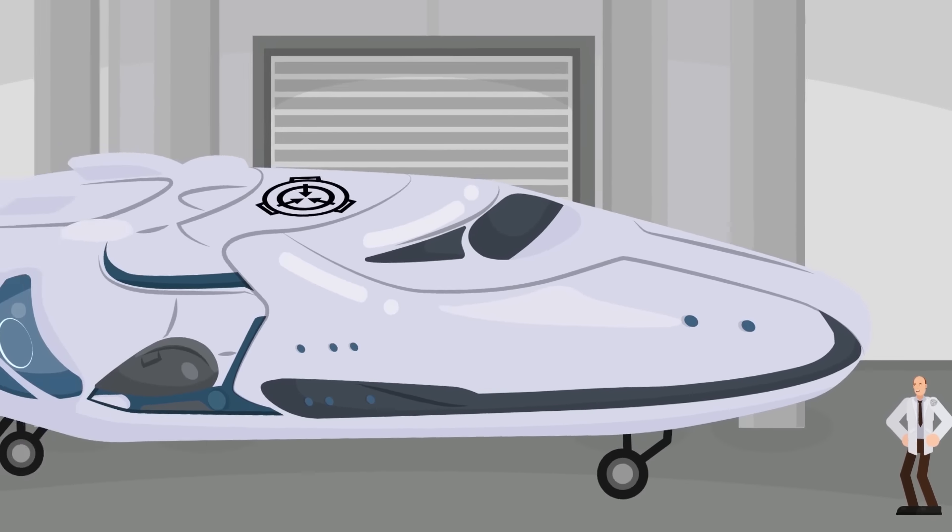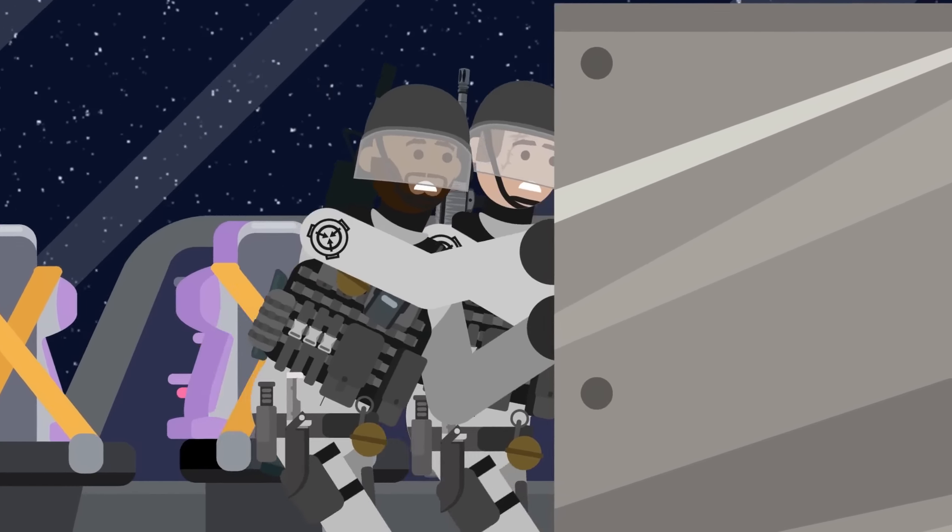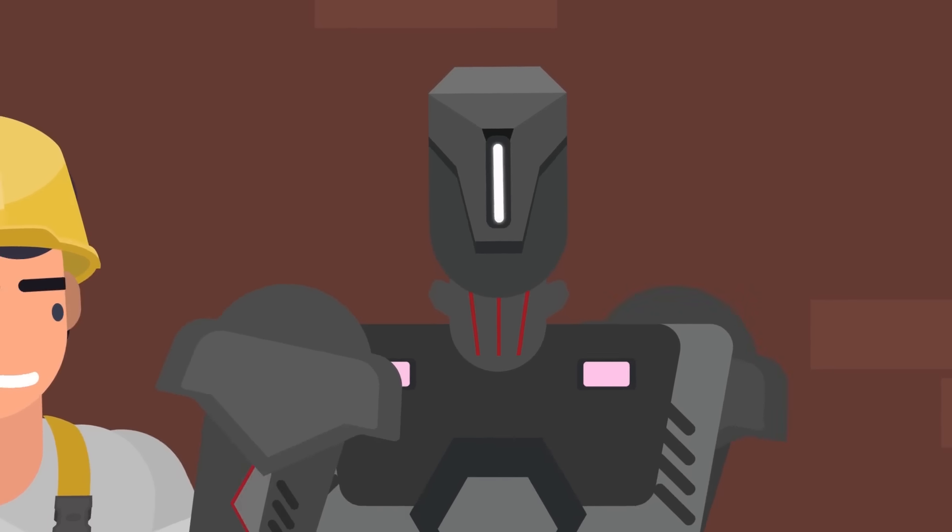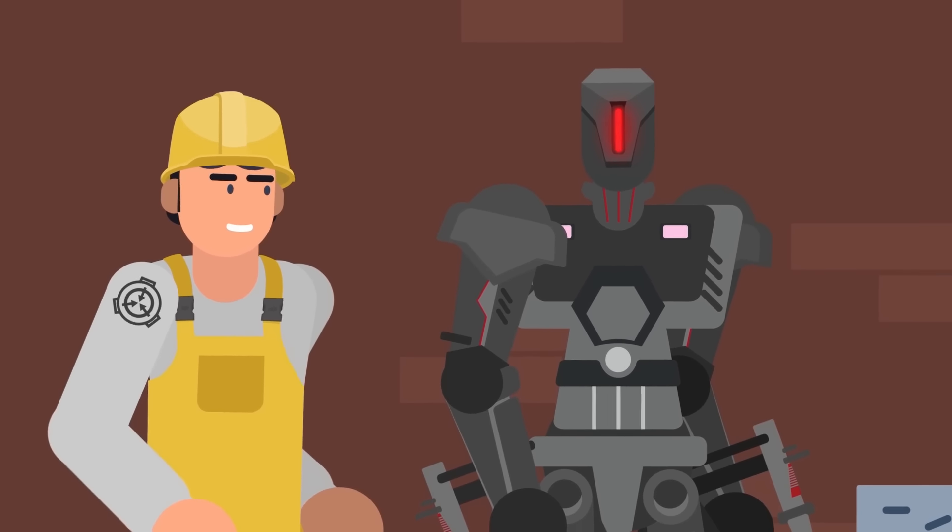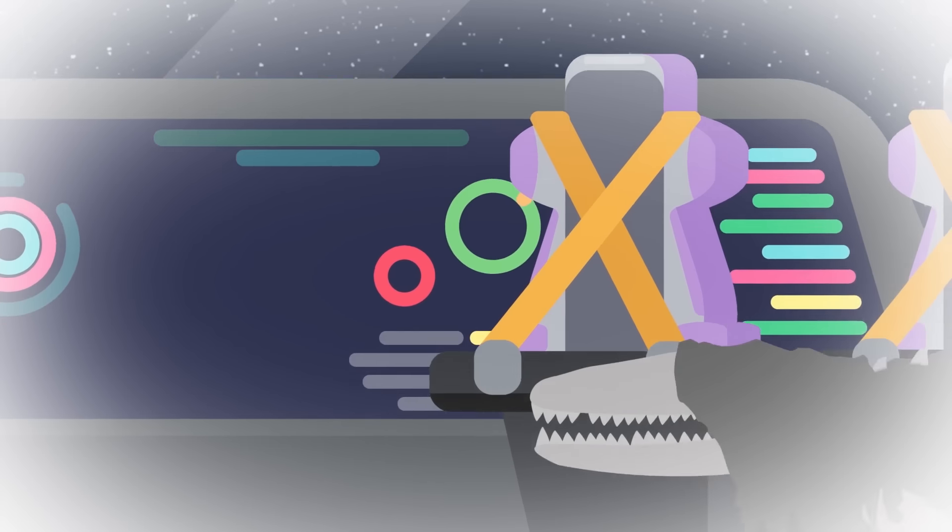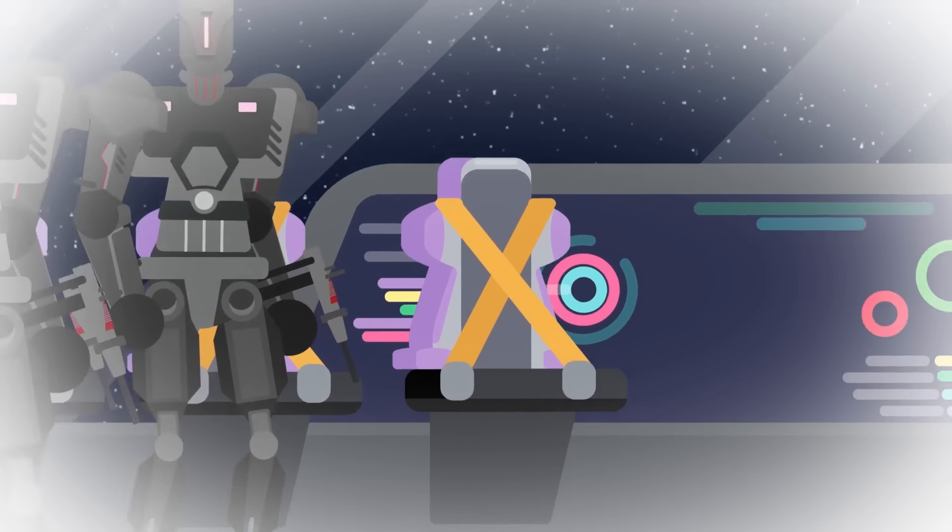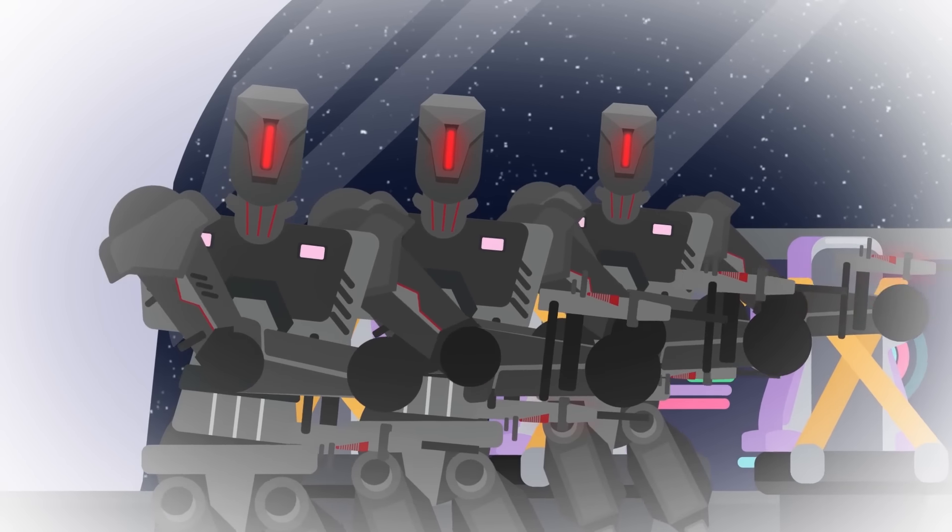The spacecraft was completed within a month of the meeting, and SCP-682 was herded into a fresh new vat of acid aboard the highly secure ship. A military force of autonomous drones with the firepower equivalent to three mobile task forces was programmed to serve as the crew. In the event that SCP-682 broke containment in deep space, the robots would battle with the reptile in an attempt to contain it.